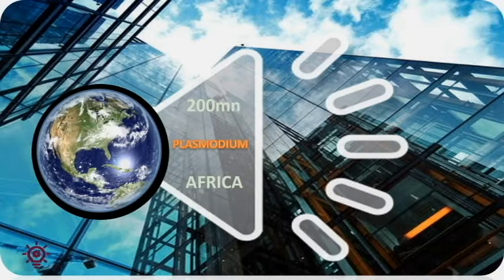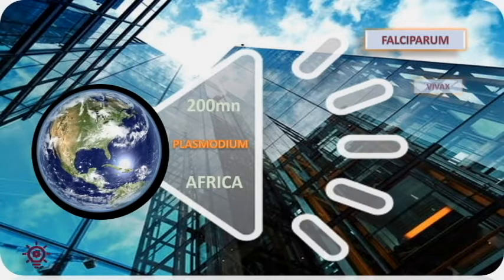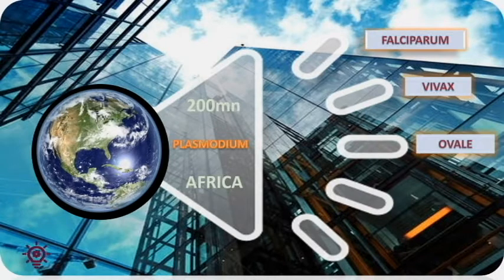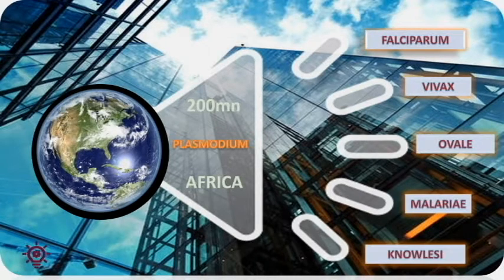There are five species of plasmodium parasites responsible for malaria infection in humans: Plasmodium falciparum, Plasmodium vivax, Plasmodium ovale, Plasmodium malariae, and Plasmodium knowlesi. Plasmodium knowlesi rarely causes the disease in humans.